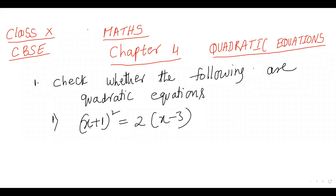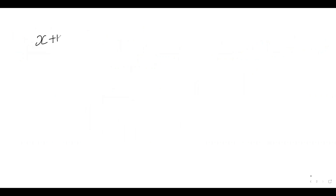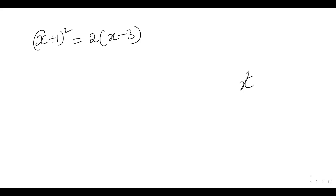A basic type of question is: check whether the following are quadratic equations or not. For the first bit: (x + 1)² = 2(x − 3). I will simplify this and check if the degree is 2. If degree equals 2, I conclude it is quadratic; if not, it is not quadratic. The left-hand side is in the form (a + b)², which expands to a² + b² + 2ab.